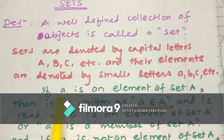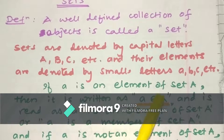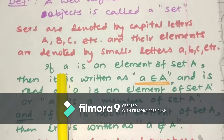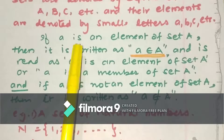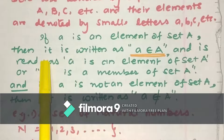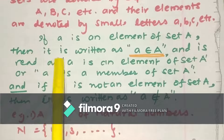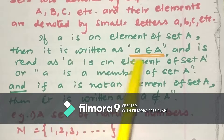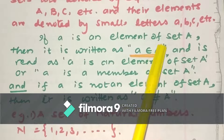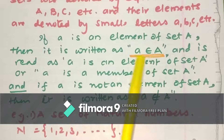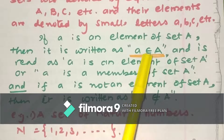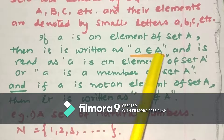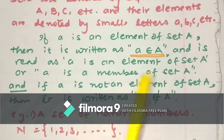Now, if we denote a set by A and there is an element a in that set, then we have some notation to represent it. If a is an element of set A, we can express it in symbolic form as 'a belongs to A'. This is the symbolic notation for 'belongs to'. We call it 'belongs to' or 'in' — a is in A, or a belongs to A.